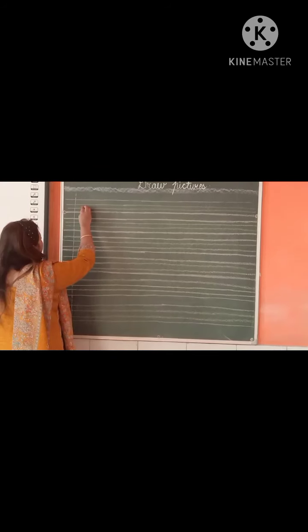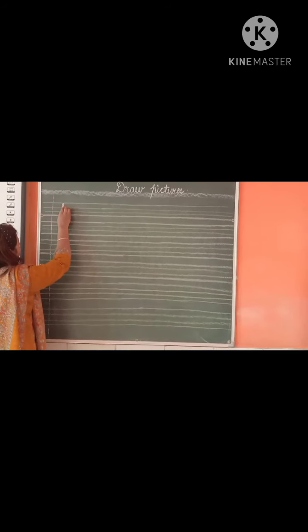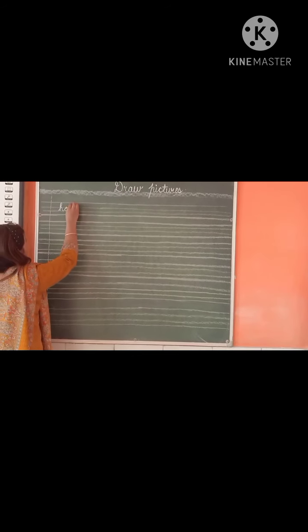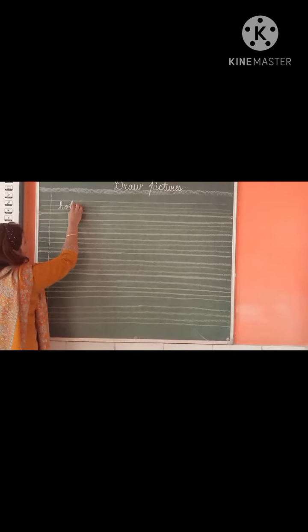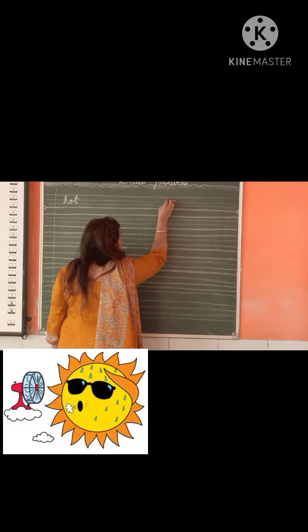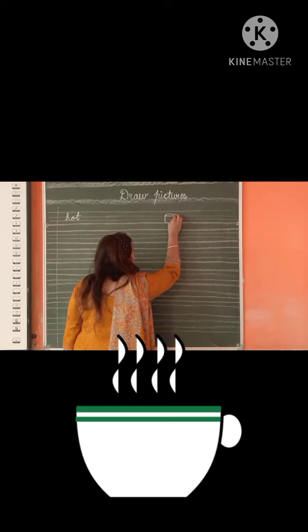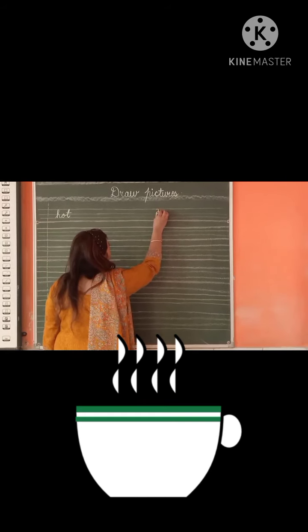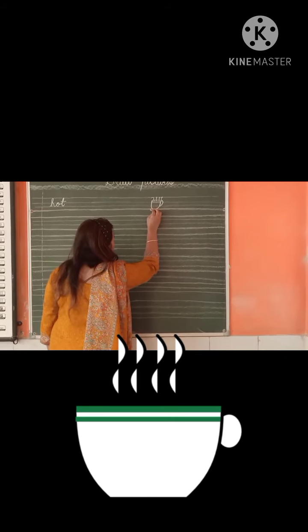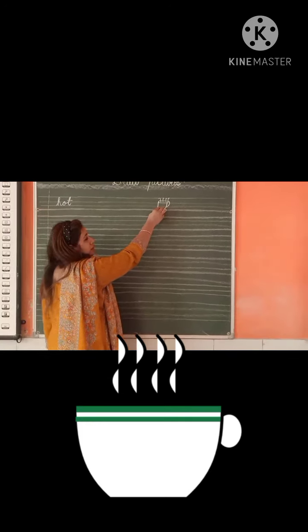First word is hot. H-O-T, hot. Hot means? Garden. Yes! Right! So here we will draw the picture of hot.